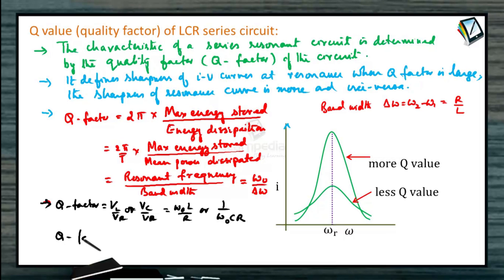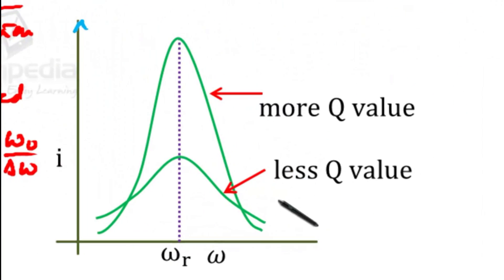So Q factor we can also write it as equal to 1 by R under root of L by C. So this will have more Q value, this will have less Q value, flat. This is the frequency which you are taking an omega value here.